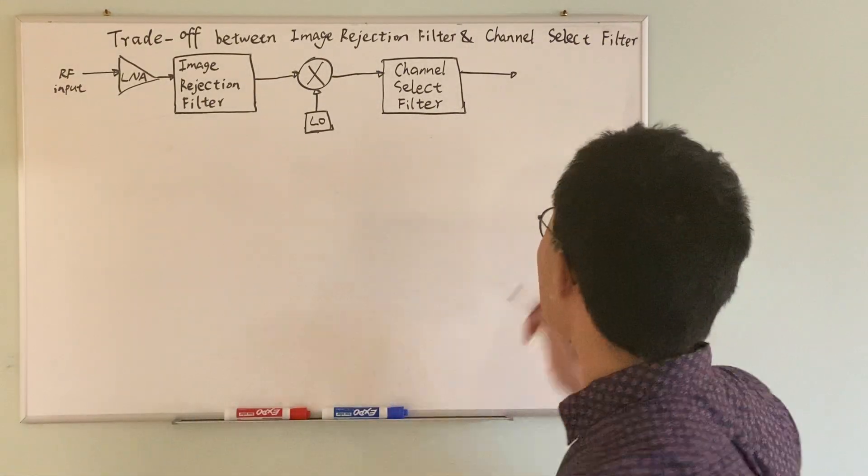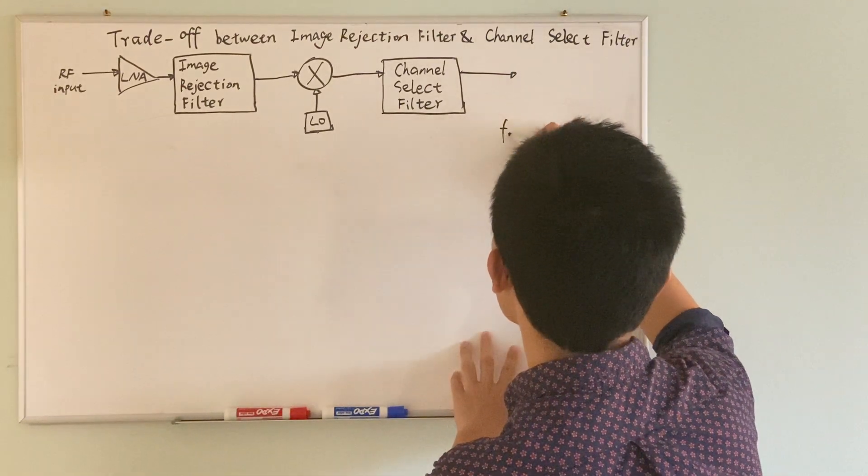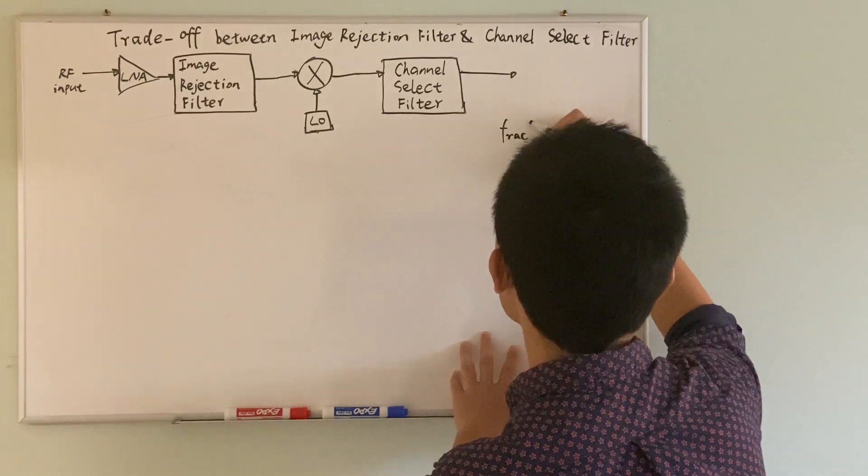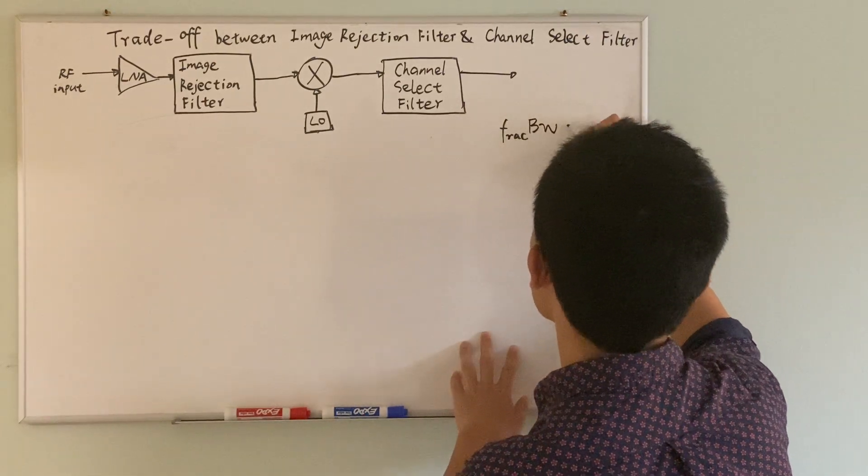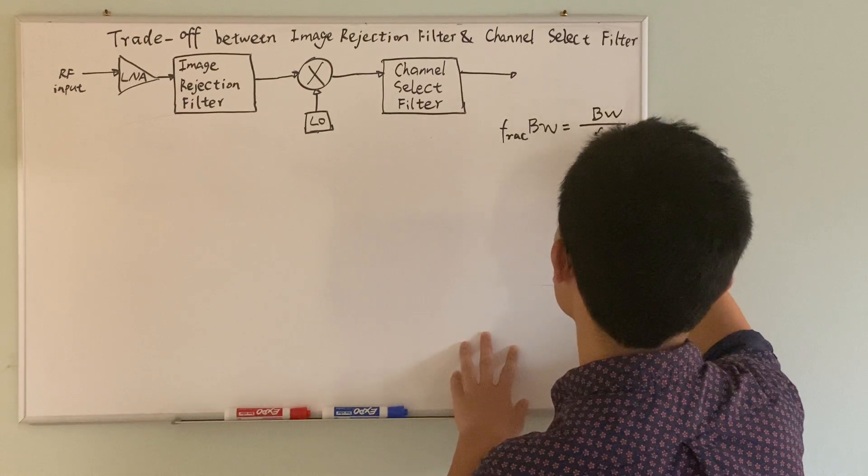I'm just going to put that equation on the side. So fractional bandwidth equals the absolute bandwidth divided by the center frequency.